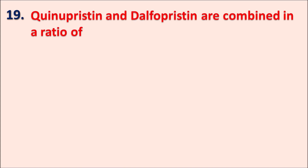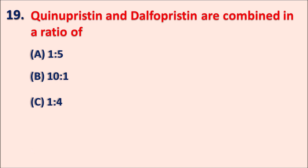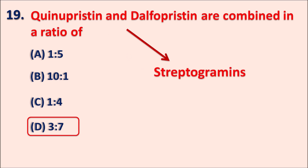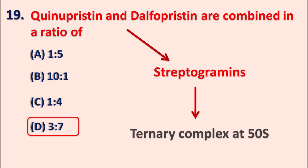Nineteenth one: quinupristin and dalfopristin are combined in a ratio of — A: 1:5, B: 10:1, C: 1:4, D: 3:7. The right answer is 3:7. Quinupristin and dalfopristin are streptogramins; they are never given alone but always in combination at a ratio of 3:7, meaning 30% quinupristin and 70% dalfopristin. These streptogramins produce a synergistic effect by binding to the 50S subunit, forming a ternary complex to inhibit protein synthesis.